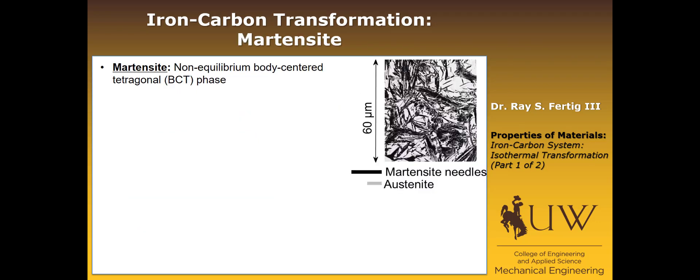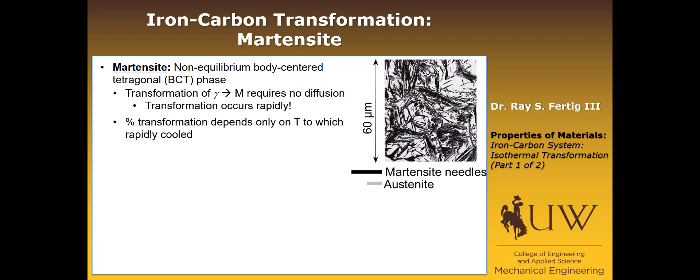If we cool really fast, we end up with a microstructure called martensite. It's actually a non-equilibrium, body-centered tetragonal phase. The micrograph shows needles of martensite — the BCT phase — existing in an austenite, which is FCC, matrix. This transformation converts gamma (FCC) to martensite (BCT). It doesn't require any diffusion, and because of that it transforms very rapidly. In fact, the percentage of transformation depends only on the temperature to which we rapidly cool it, not on the time.